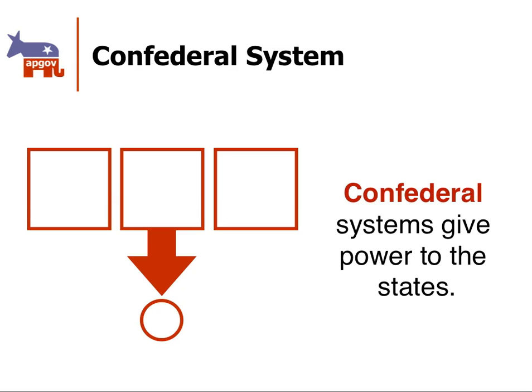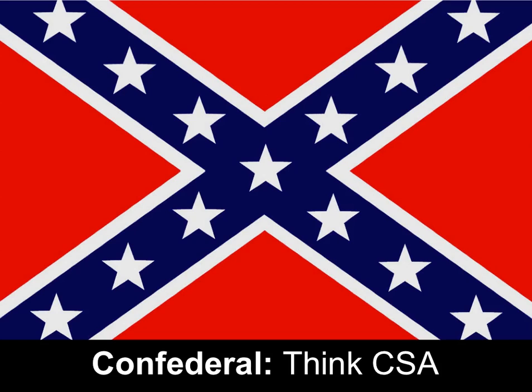The final system is called a confederal system, and that's basically a 180-degree flip-flop of a unitary system. Instead of the states being tiny and insignificant, the states have all the power, and they dictate what the central government can and can't do. When you hear confederal, I want you to think the Confederate States of America, or you could think about the Articles of Confederation, which was the first Constitution that the United States used after we became independent. It didn't work for us — these tend to be highly unstable — and then we chose to create a federal system instead.